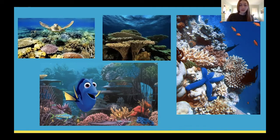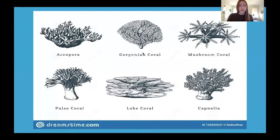Firstly, coral is a solid because it has a definite shape and its particles are tightly put together, so they're not able to move about. Macroscopically, corals come in a wide variety of shapes. As we can see here, these are just a couple of the common shapes that are formed in varying environments.